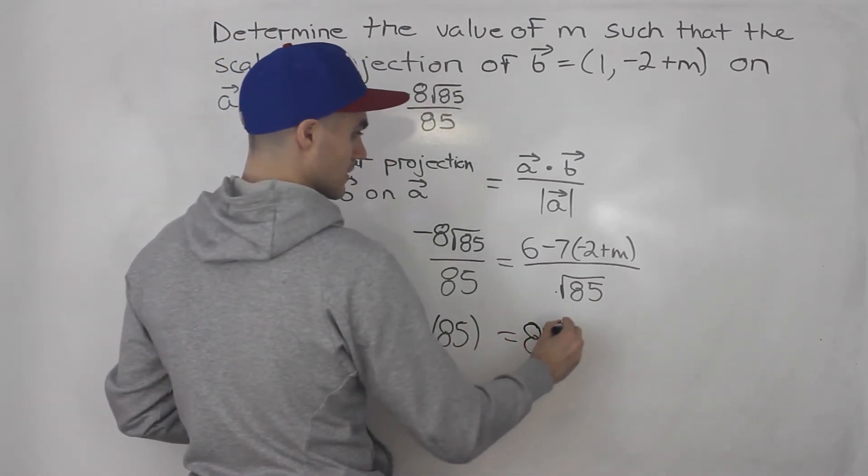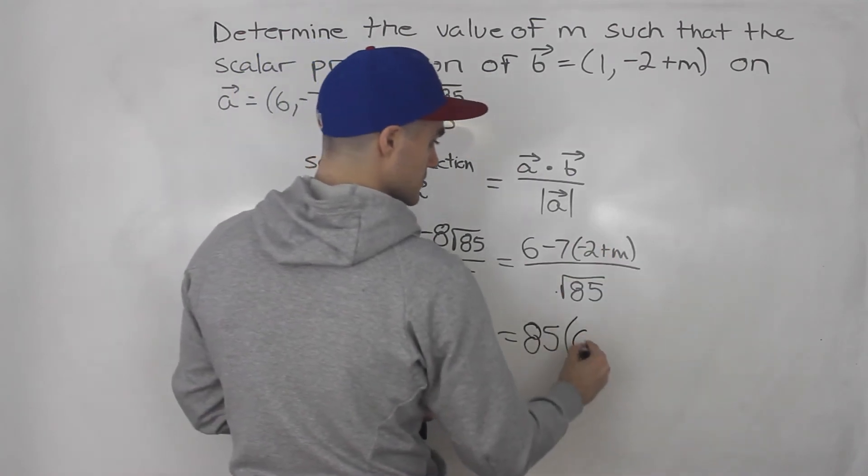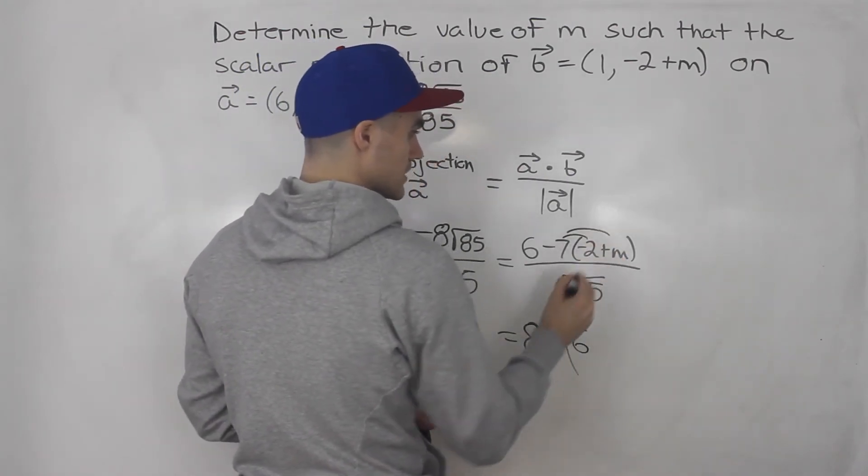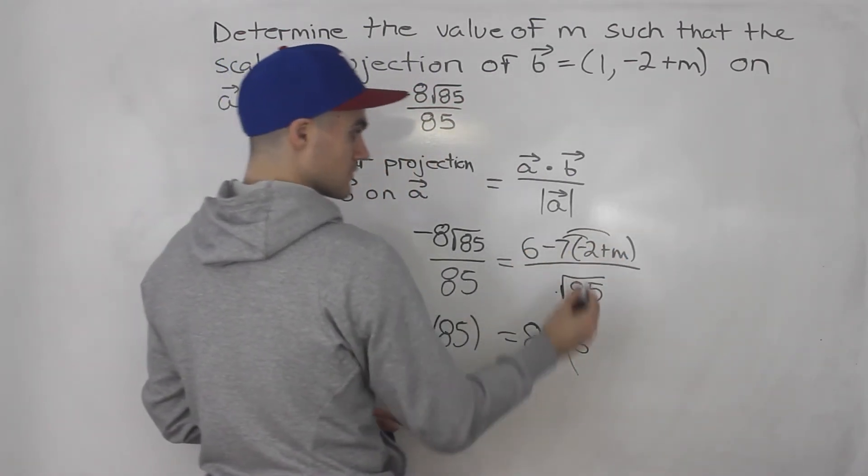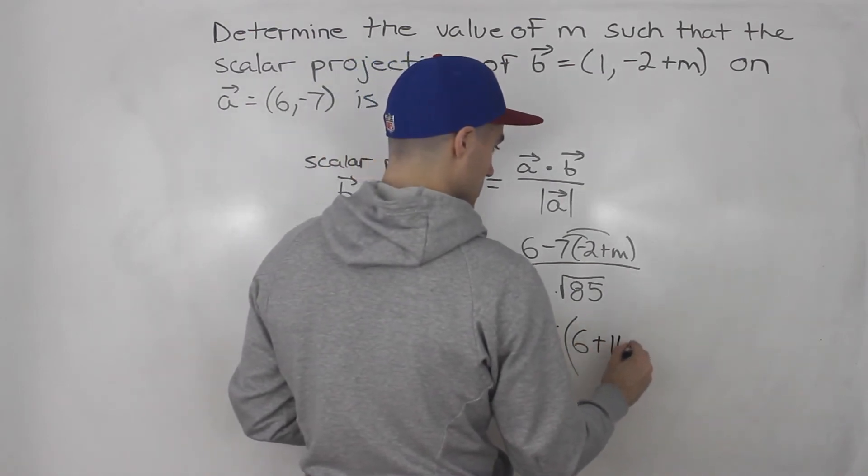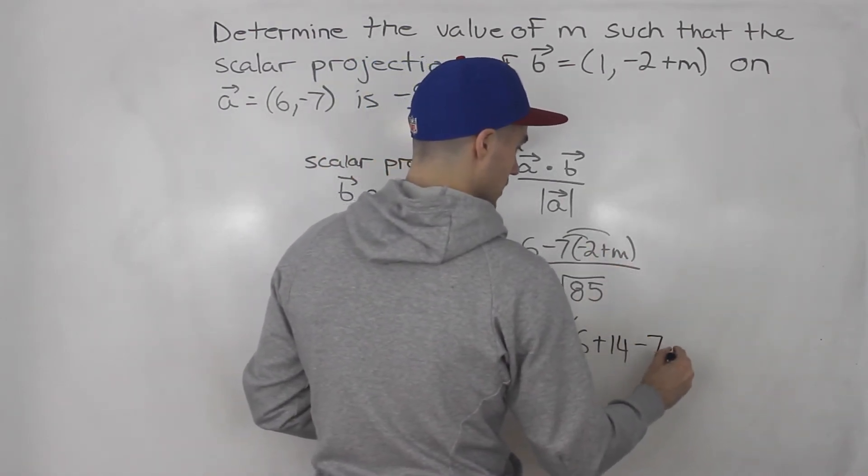on the outside here multiplied by this whole expression. So 6, let's distribute this -7 in the bracket. So -7 times -2 is positive 14. -7 times m is -7m.